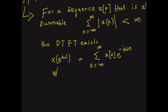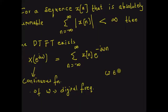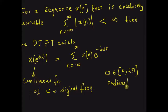Note that this transform is a continuous function of the digital frequency omega. Omega usually belongs to the interval 0 to 2 pi or minus pi to plus pi, and is measured in radians per sample.